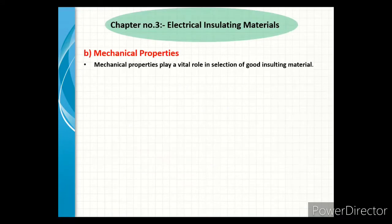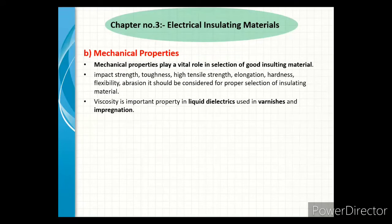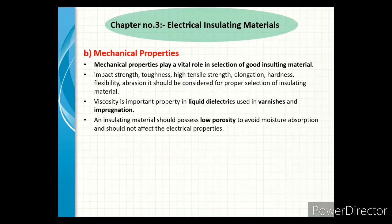Next, we see the mechanical property of insulating material. Mechanical property plays a vital role in the selection of a good insulating material. This property impacts strength, toughness, high tensile strength, elongation, hardness, flexibility, and abrasion — these should be considered for proper selection of insulating material. Viscosity is an important property in liquid dielectric used in varnishes and impregnation. An insulating material should possess low porosity to avoid moisture absorption and should not affect the electric property.